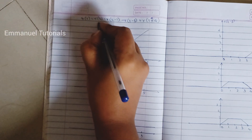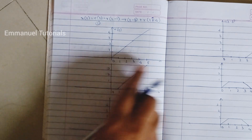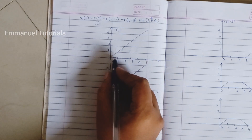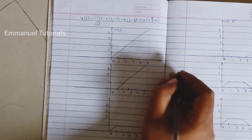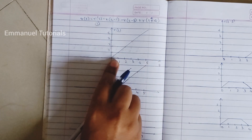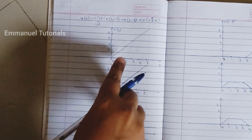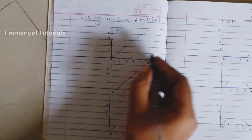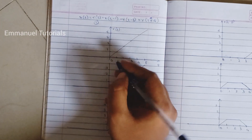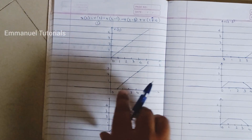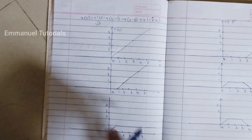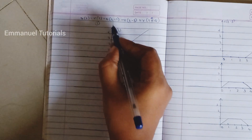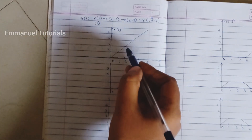r(t) is a simple ramp signal which starts from 0 and goes up to infinity. It has amplitude equal to t at every point, so at t=0 amplitude is 0, at t=1 amplitude is 1, at t=2 amplitude is 2, and so on. This gives a 45-degree line across the positive x and y axes. Next is r(t-1), which is a delayed version of the ramp shifted to the right.